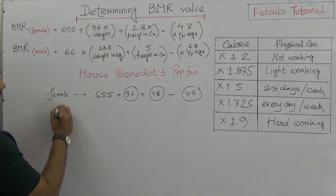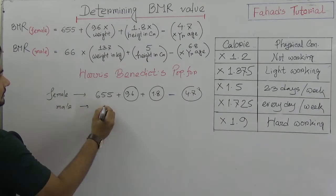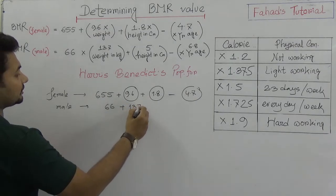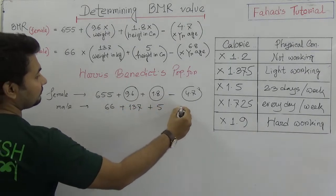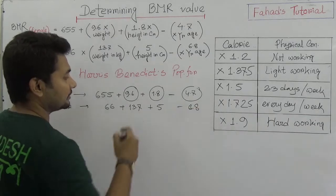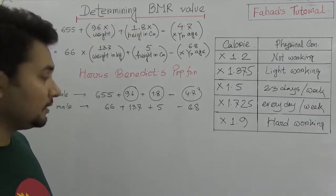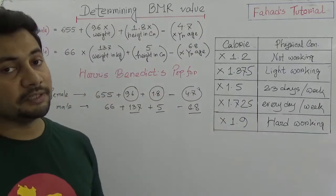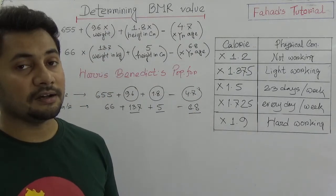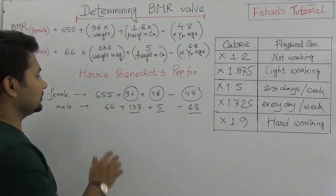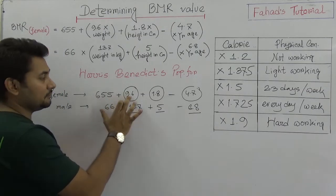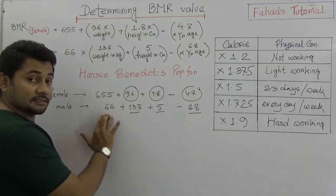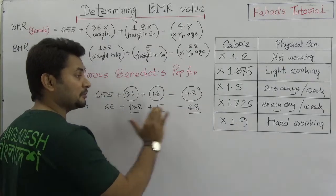But for male the formula is different. Instead of 655 it is only 66. The multipliers change: it is 13.7 for weight, 5 for height, and 6.8 for age. So the values to memorize for male are 66, 13.7, 5, and 6.8.